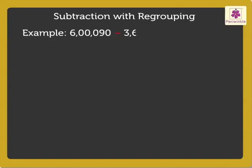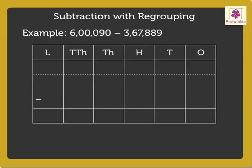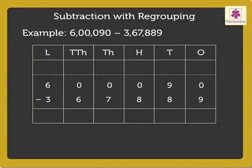Now, let us subtract 3 lakhs 67,889 from 6 lakhs 90. Write the numbers 6 lakhs 90 and 3 lakhs 67,889 in the place value chart. As there are not enough ones, let us regroup 9 tens as 8 tens and 10 ones. Now, subtract the ones, i.e. 10 minus 9 is equal to 1.